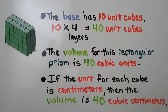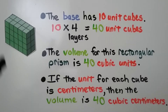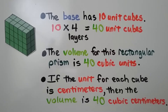Here's a rectangular prism where the base has 10 unit cubes. There are 4 layers. We do 10 times 4 layers — that's equal to 40 unit cubes. So the volume for this rectangular prism is 40 cubic units. If the unit for each cube is centimeters, then the volume is 40 cubic centimeters.